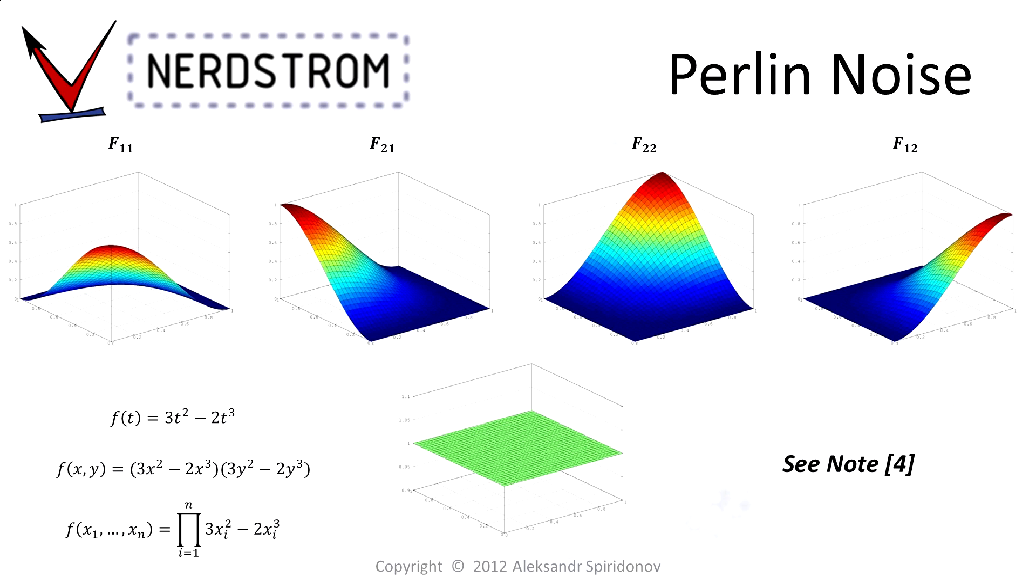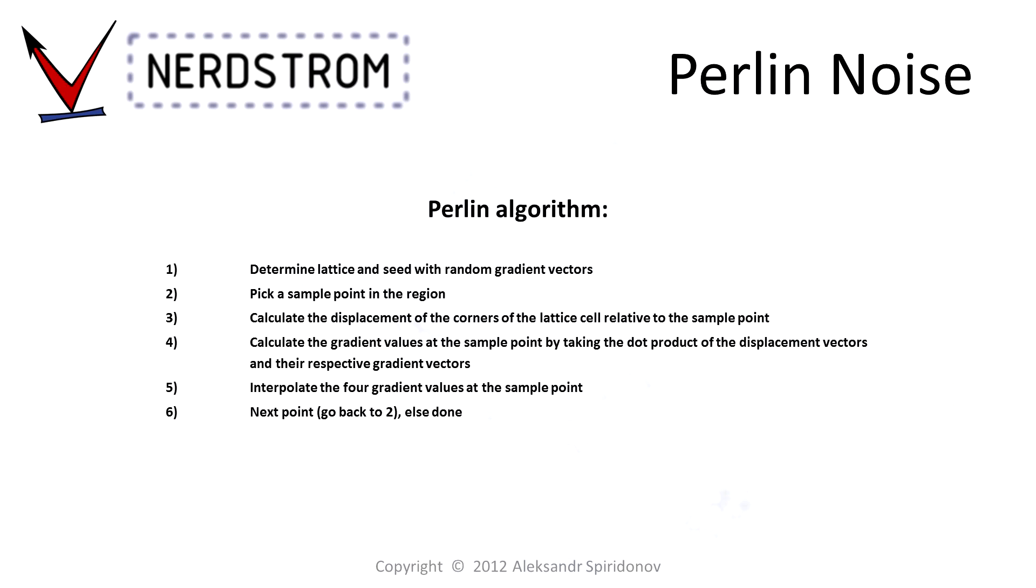Now, before we move on to the implementation of the algorithm, let's review what steps are necessary. First, we pick a region and split it into a lattice of cells, which we seed with random vectors. Then, as we loop across all the desired sample points in the region, we perform the following.